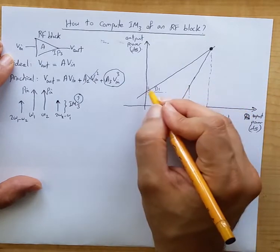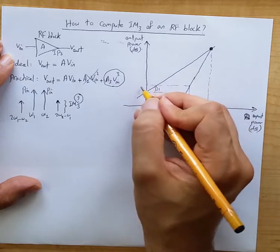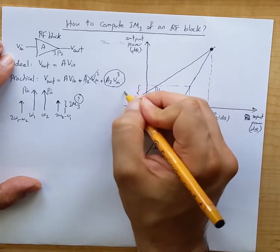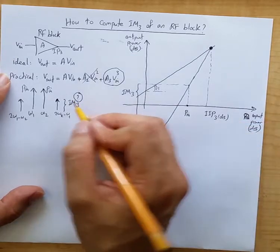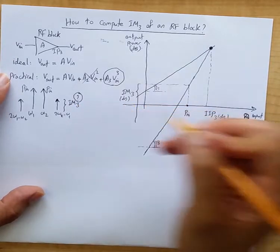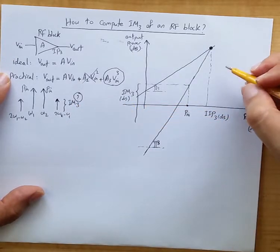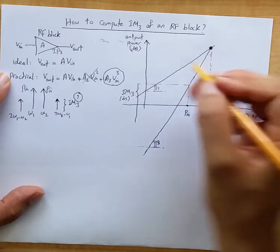there is a third-order intermodulation product IM3 in dB that we are interested to be able to compute. We know this is intercept point of third-order.